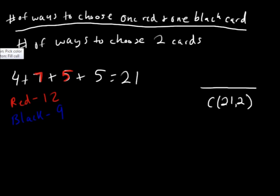So what we're trying to do is find the number of ways to choose one red card and one black card. And in order to do that, it's pretty simple. C(12,1) and we're going to multiply, because we're choosing one red card and one black card, not one red card or one black card. And you always know that 'and' means multiply, 'or' means add. So you're going to multiply C(12,1) times C(9,1).